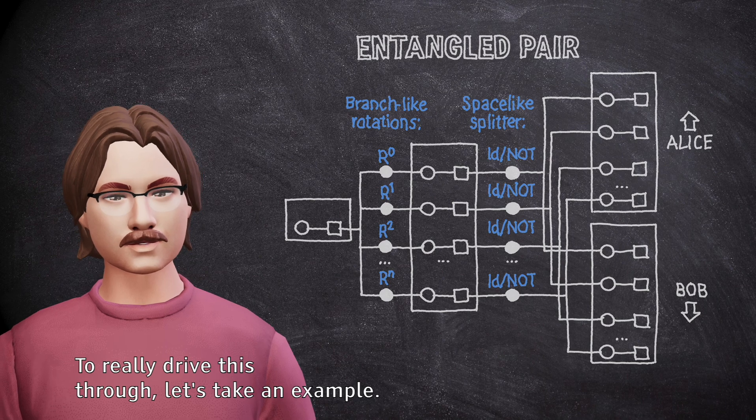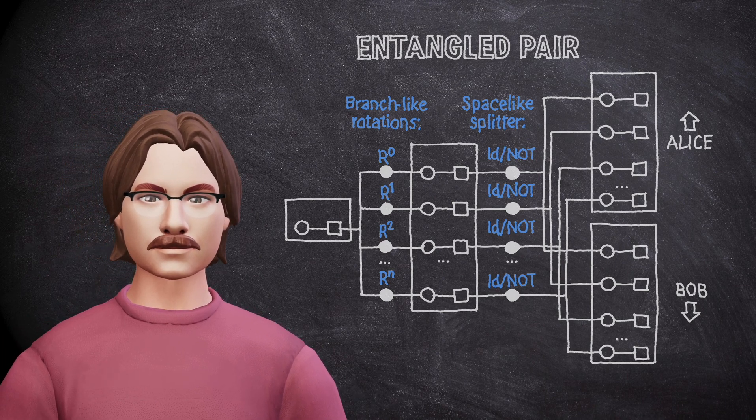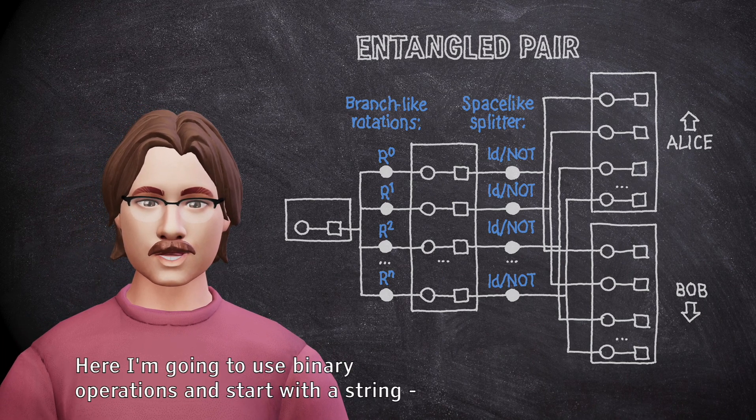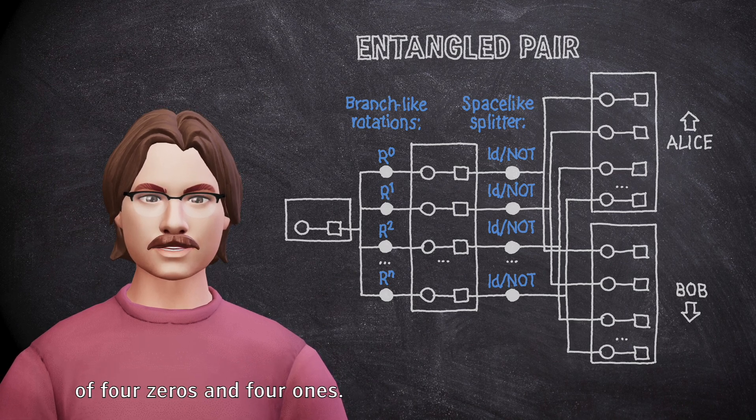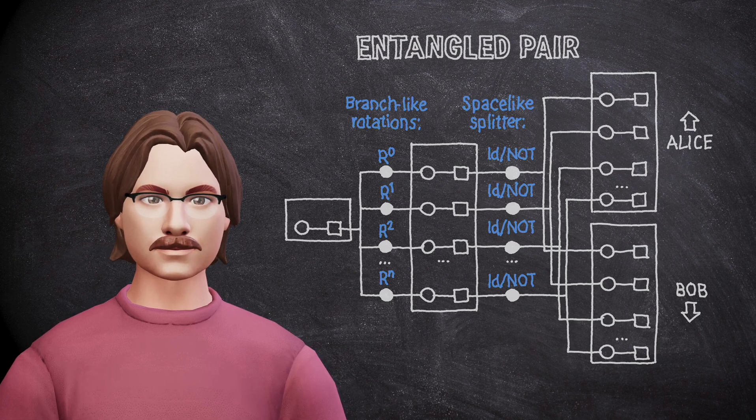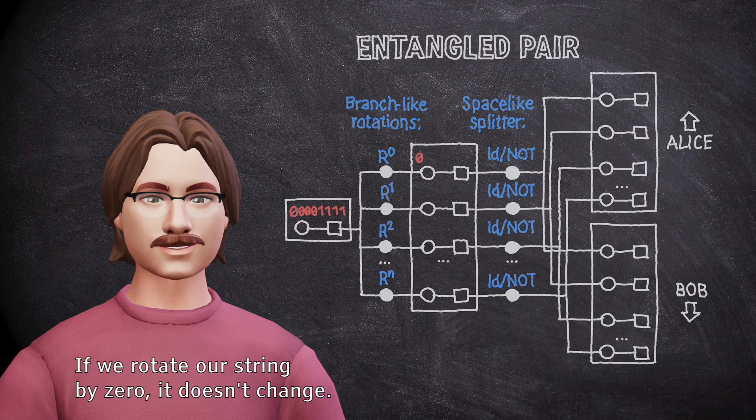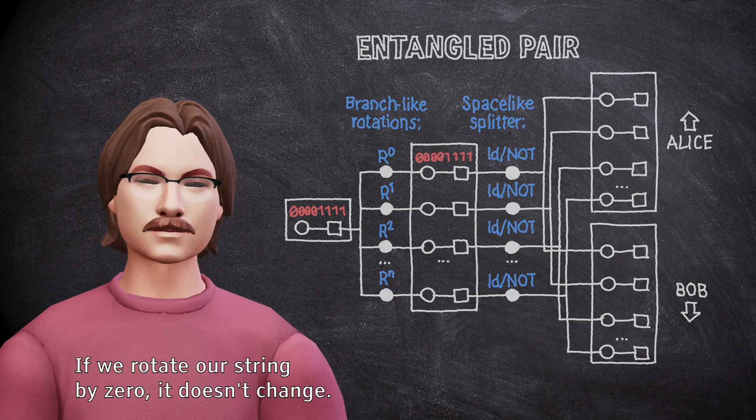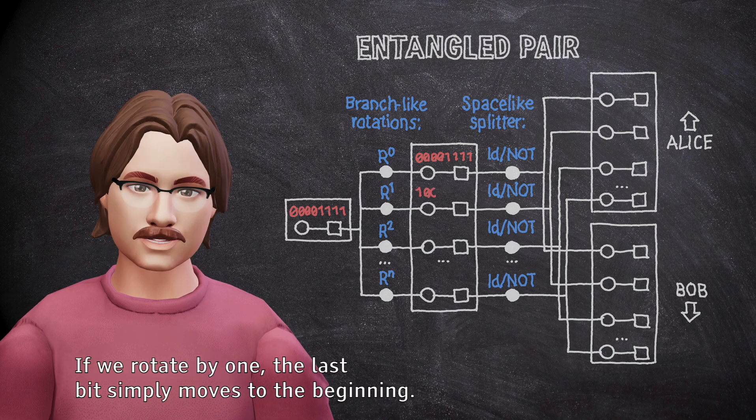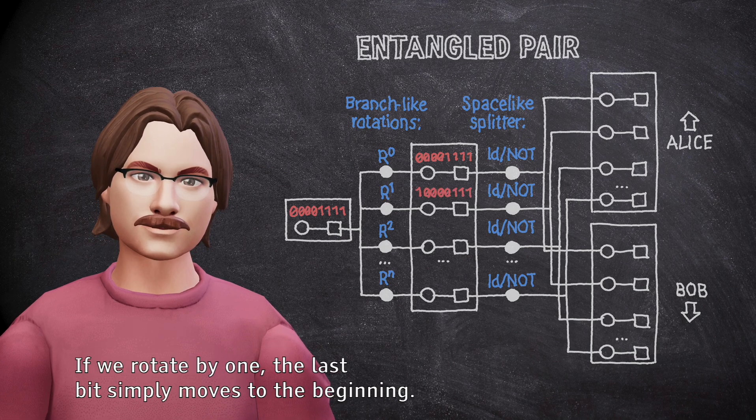To really drive this through, let's take an example. Here I'm going to use binary operations and start with a string of four zeros and four ones. If we rotate our string by zero, it doesn't change. If we rotate by one, the last bit simply moves to the beginning.